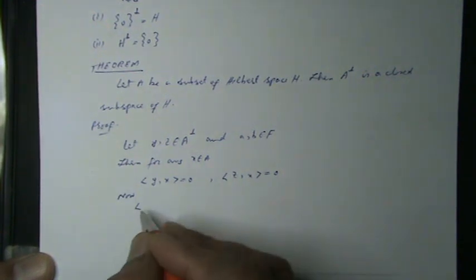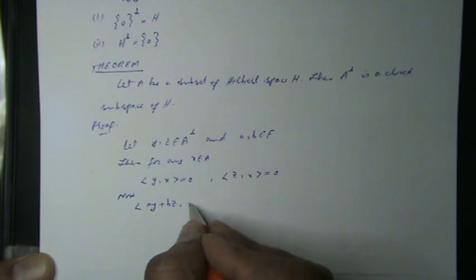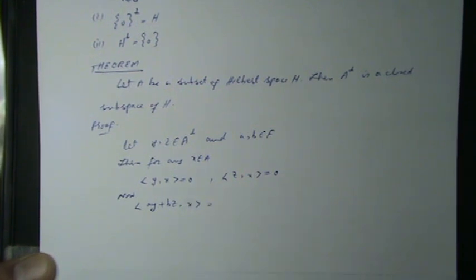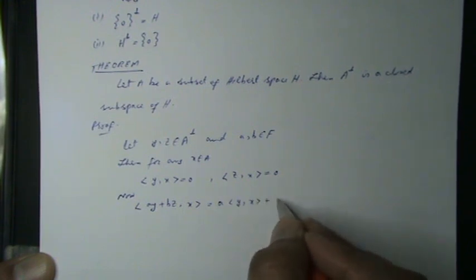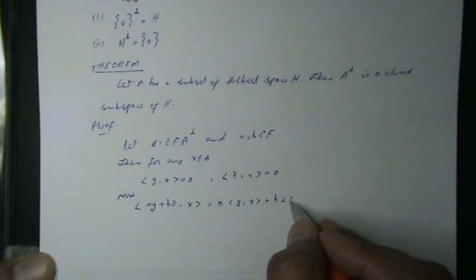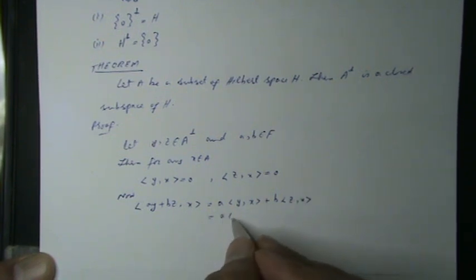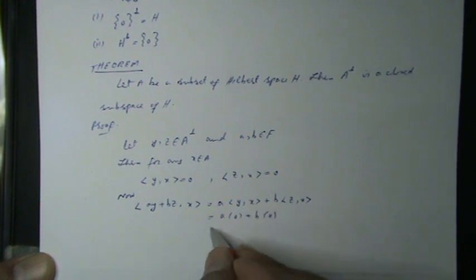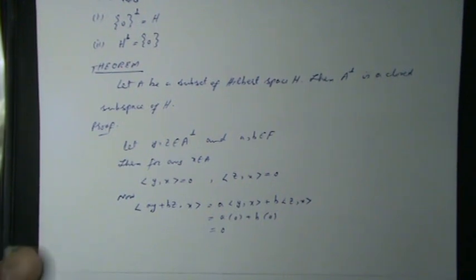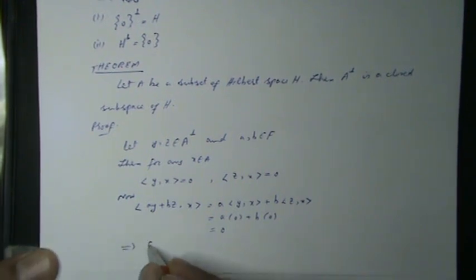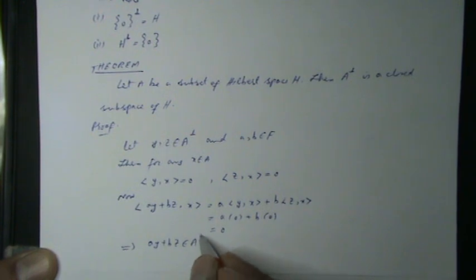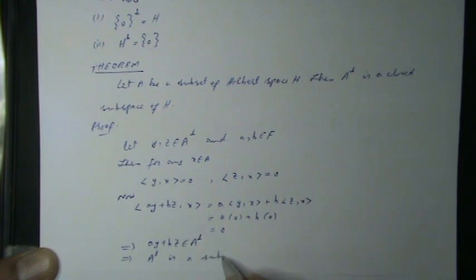Now, the inner product of (ay + bz) with x can be written as a times the inner product of y with x, plus b times the inner product of z with x. This equals a·0 + b·0 = 0. This implies ay + bz belongs to A⊥, which shows A⊥ is a subspace of Hilbert space H.